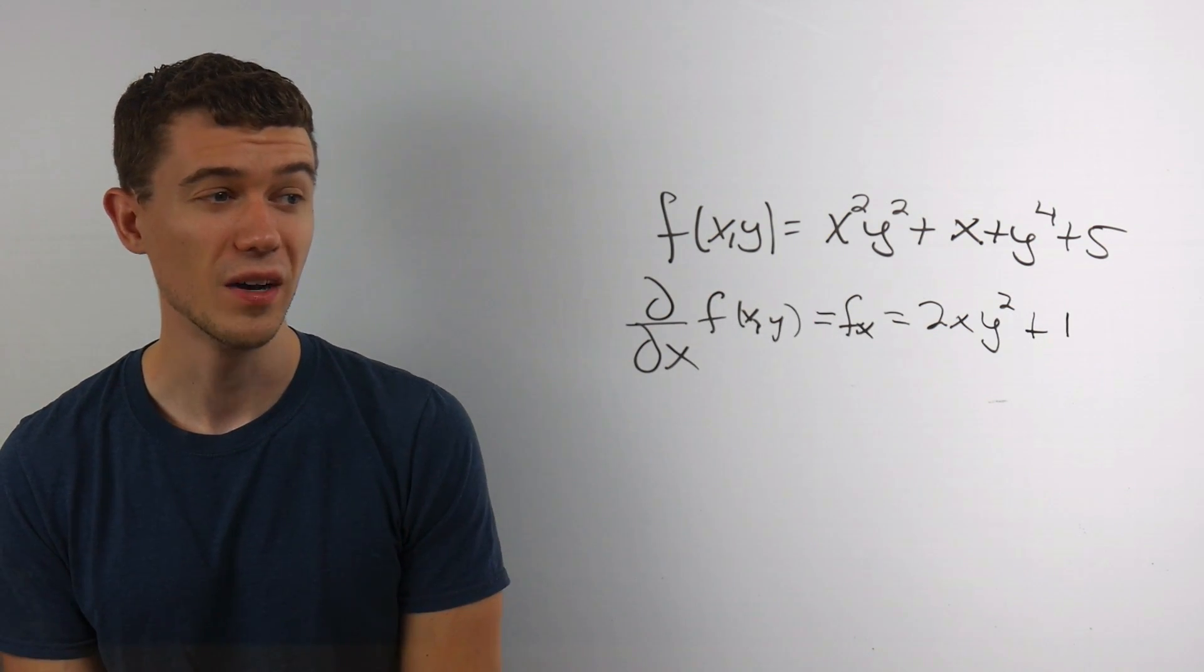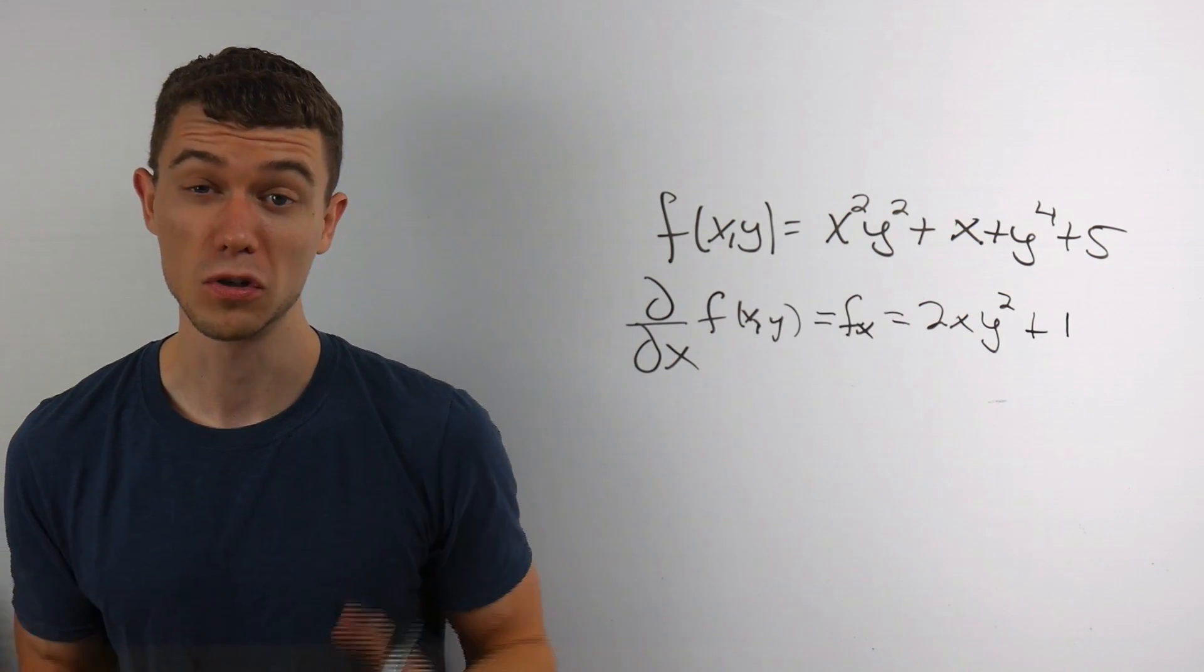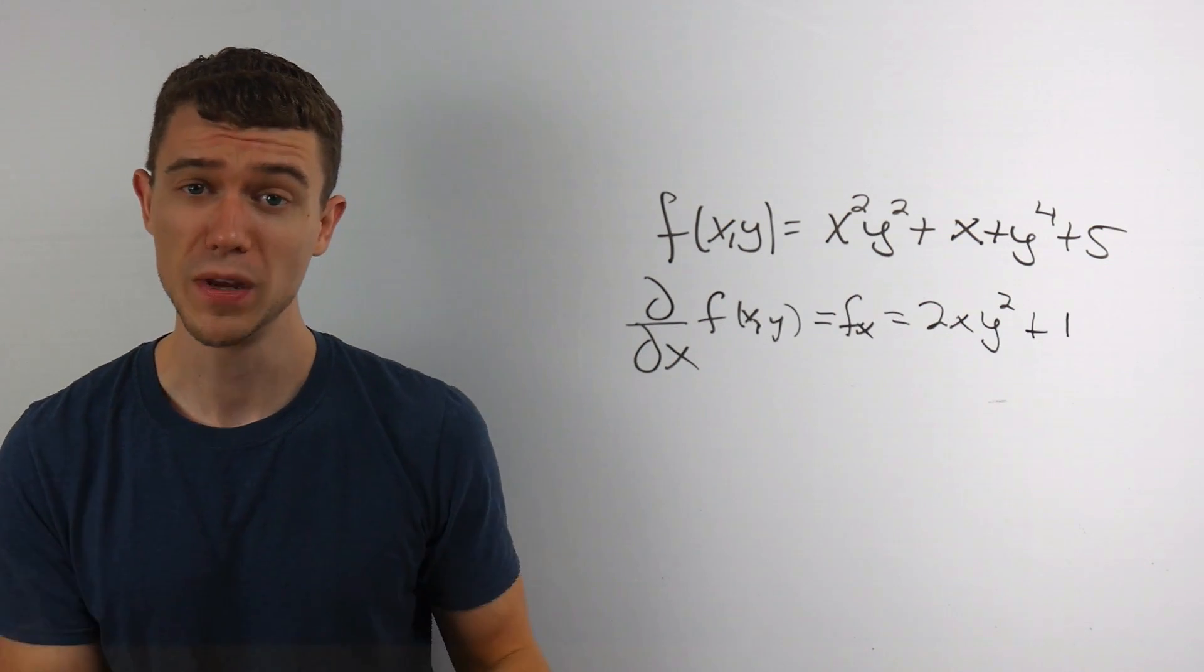Same with this 5. The derivative of 5 is 0. So that's it. That's the entire partial derivative. It's actually not too bad.